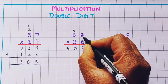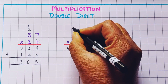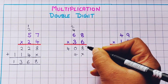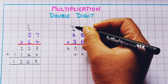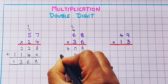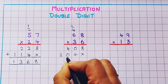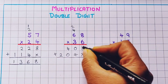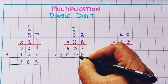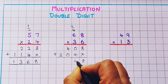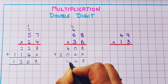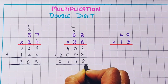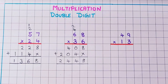3 eights are 24, so here I'll write 2 and here 4. Now 3 sixes are 18, plus 2 is 20, so I'll write 2 and here 0. Now I'll put a plus sign and do the addition: 8, 0 plus 4 is 4, 4 plus 0 is 4, and here 2 comes as it is. So the answer is 2448.